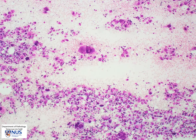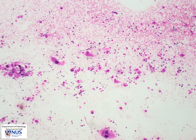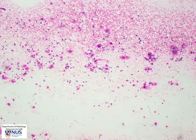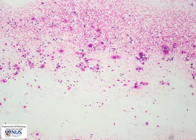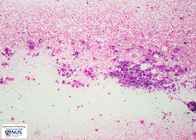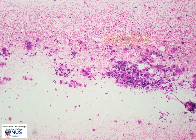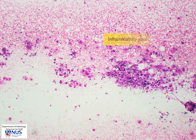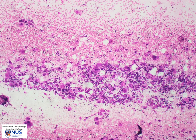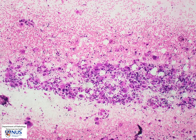Here is another area with very large bizarre cells and at the same time there are other very atypical pleomorphic cells in the background. We also see some inflammatory cells present in the background, which is not an uncommon finding in anaplastic thyroid carcinoma.